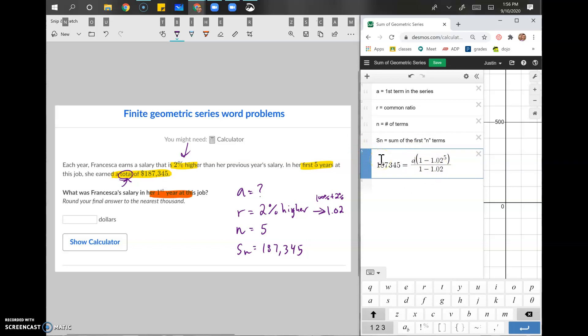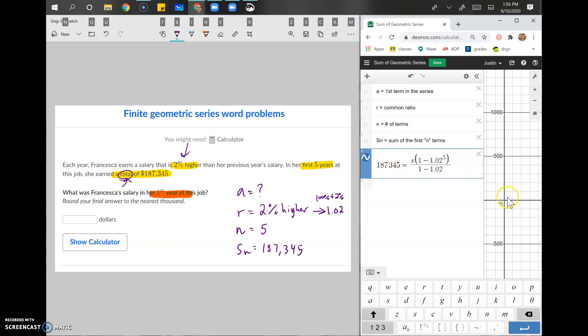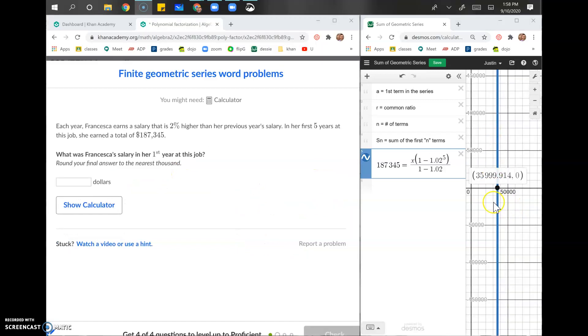I can see as soon as I changed that, I got a line, right? No line. Boom. X line. Cool. And if we're solving for X, we're going to zoom out to find where the line crosses the X and it crosses at 35,999.914. That's a rounded decimal.